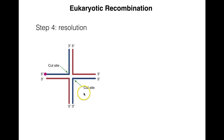After heteroduplex extension, we have a Holliday junction that needs to be resolved. Just as in the Holliday junction discussion, there's isomerization and a cross that needs to be cut to separate the new chromosomes. In prokaryotes, RUVAB would recognize the Holliday junction and facilitate branch migration, while RUVC would then cut the DNA. However, no RUVC protein has been found in eukaryotes.